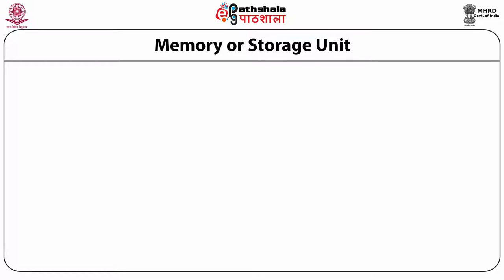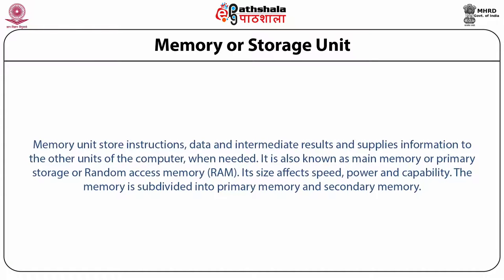Next is the memory or storage unit. It stores all the instructions, data and intermediate results, and supplies information to other units of the computer as and when needed. It is also known as main memory, primary storage, or RAM. The size of this memory affects the speed, power and capability of the system as a whole. Memory may be divided into primary memory — constituting RAM and read-only memory (built-in memory) — and secondary memory.